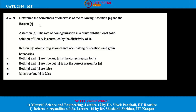Getting on to the answer, we need to know whether these are true or false statements. The first statement — the rate of homogenization in a dilute substitutional solid solution of B in A is controlled by the diffusivity of B — is a true statement. Here, A is the solvent and B is the solute atoms. The rate of homogenization in dilute alloys is controlled by how fast the solute B atoms can diffuse into the solvent. The only way homogenization can be achieved is migration of B atoms into solute-depleted regions.